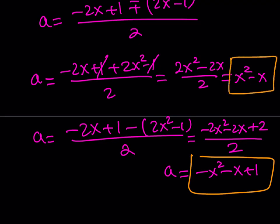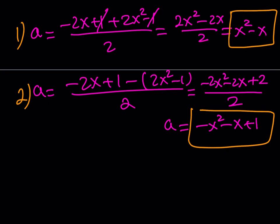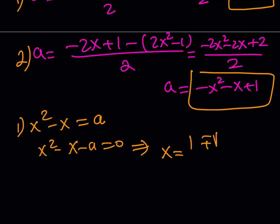We were trying to solve for x. If we can express a in terms of x, we can now switch roles and write each as a quadratic in x. From the first: x squared minus x equals a, so x squared minus x minus a equals zero. This is a quadratic in x. Solving: x equals 1 plus or minus the square root of 1 plus 4a, all over 2.